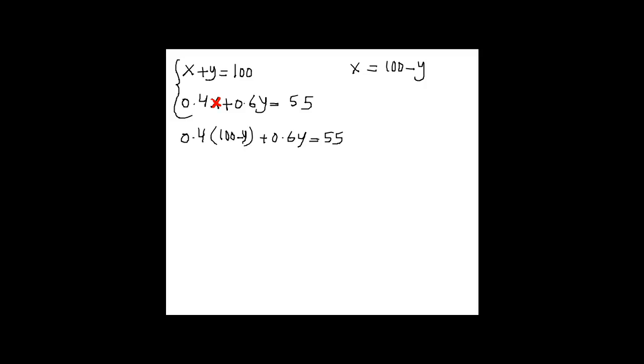Okay, I can multiply each term by 10 here to eliminate the decimal. So 10 times 0.4 would be 4 times (100 minus y), 10 times 0.6 would be 6y, and 10 times 55 would be 550. And then we can solve for y. Here we have 400 minus 4y, minus 4y plus 6y equals 550.